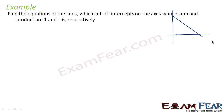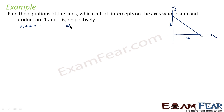This is the X-axis, this is the Y-axis. The X intercept is A and Y intercept is B. We are told that sum and product are 1 and -6, that is A plus B is equal to 1 and AB is equal to minus 6. We can find the equation that is X/A plus Y/B equals 1.